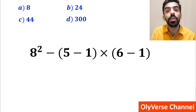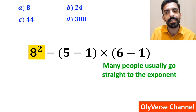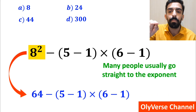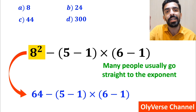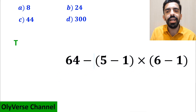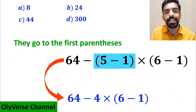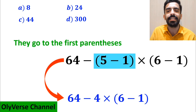In the first step, many people usually go straight to the exponent and rewrite the whole expression as 64 minus (5 minus 1) multiplied by (6 minus 1). Then they go to the first parentheses and rewrite the expression as 64 minus 4 multiplied by (6 minus 1).